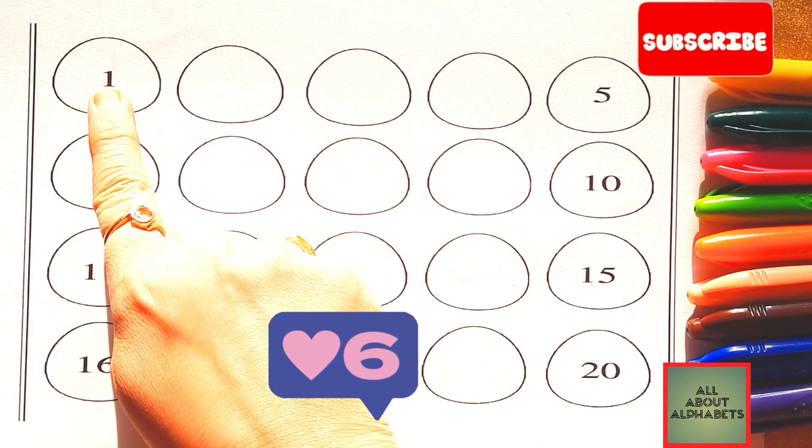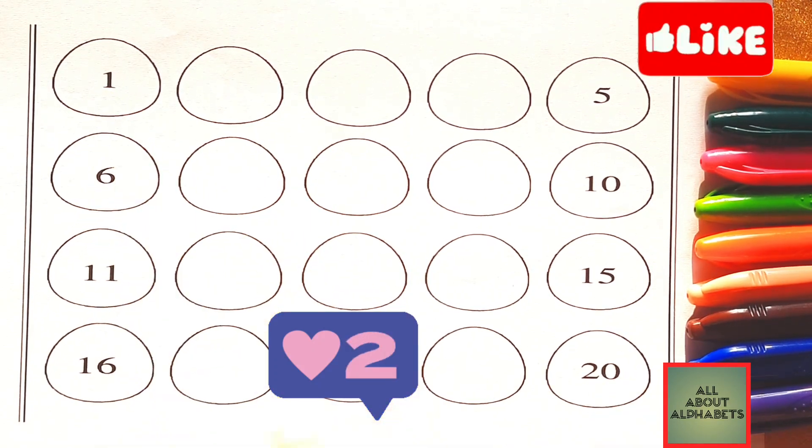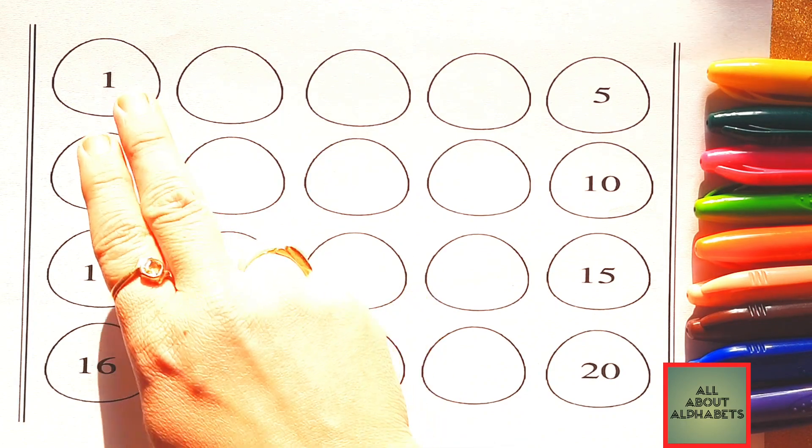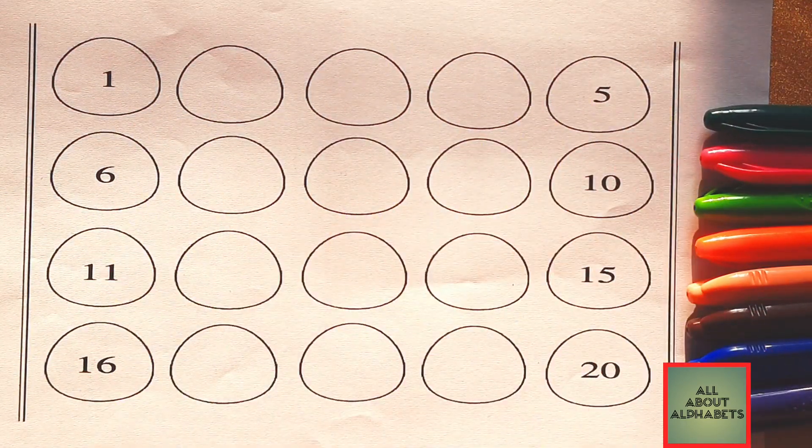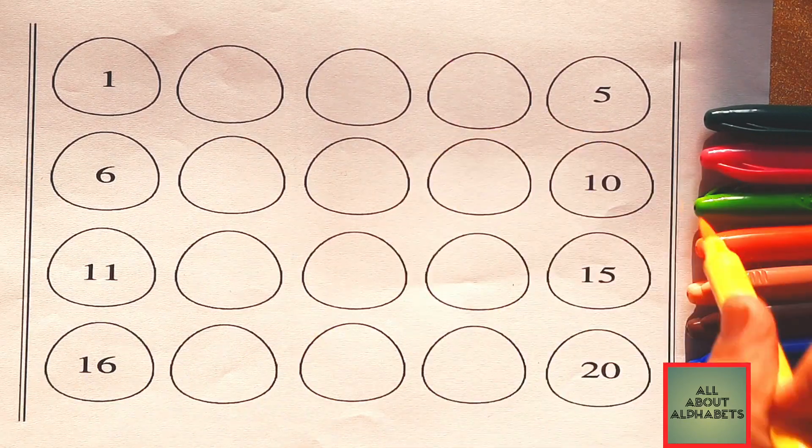Hello children! Let's learn 1 to 20 numbers. We have to find out missing numbers. These are eggs. 20 eggs.